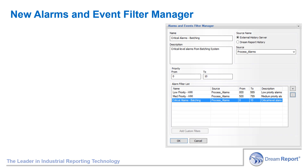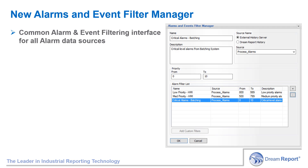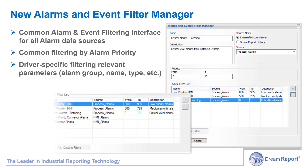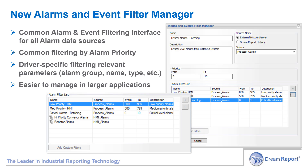The new alarms and events filter manager provides a common alarm and event filtering interface for all alarm data sources. Common filtering by alarm priority is specified in this interface. And then any alarm filtering parameters, such as alarm group, name, type, acknowledgement state, etc., configured in a specific communication driver, can be included in this interface. This alarm filter manager can then be accessed from any object that supports alarm reporting, simplifies alarm management and reporting in larger applications, and helps in performing alarm analysis to deliver on ISA 18.2 requirements, such as analysis of alarms, worst offenders, groups by assets, individuals, etc.